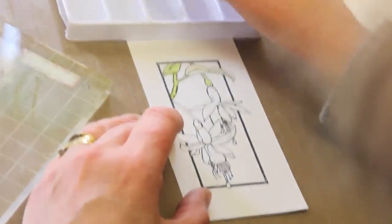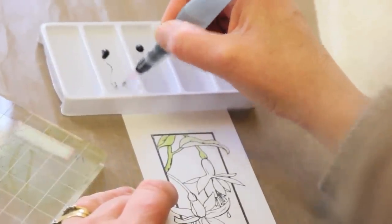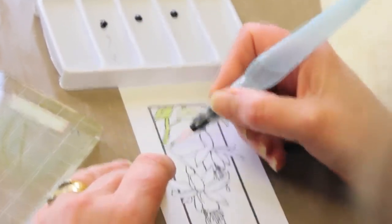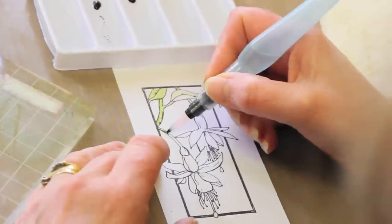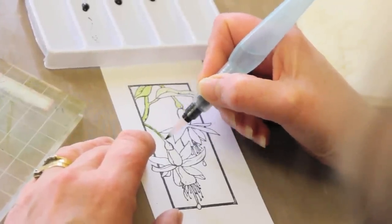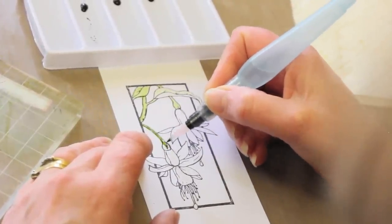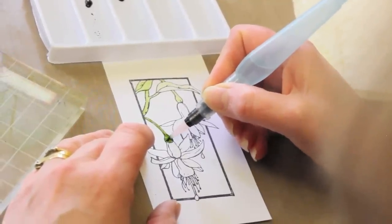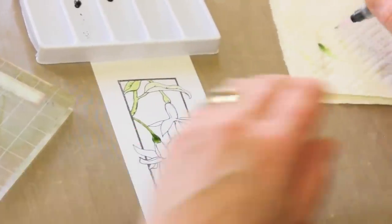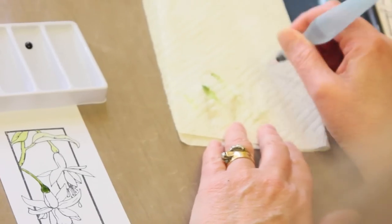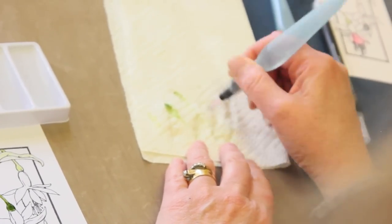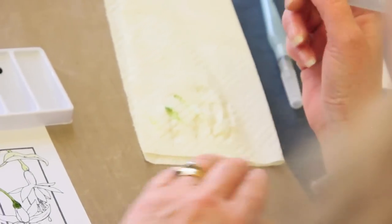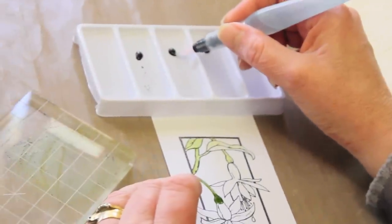But you can also use the re-inker like I've done there. To clean that off, you just wipe it on a piece of paper like that, and then you can start on your colors.